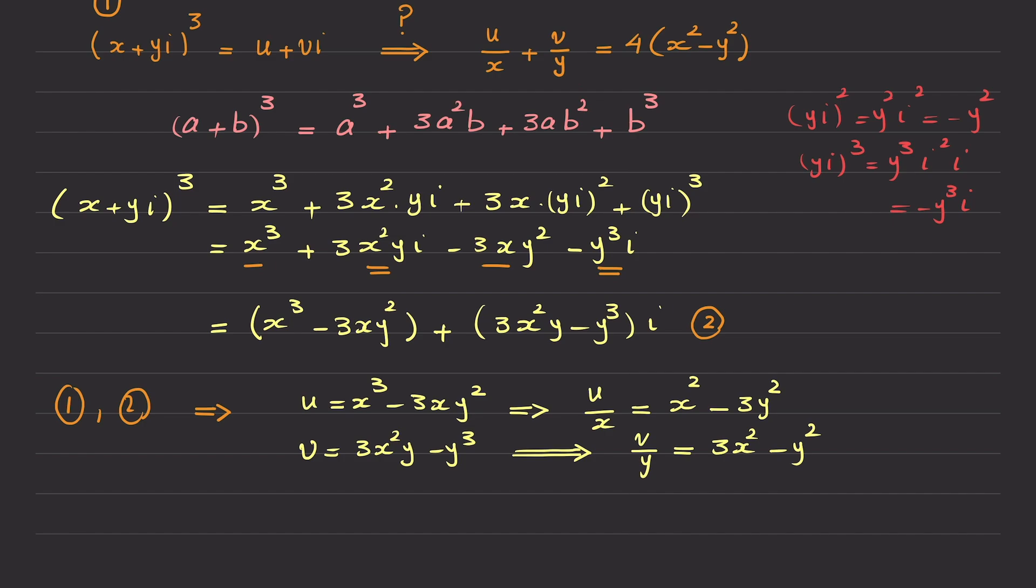Okay, but what I'm going to do, according to this, I have to add these two fractions. So I start adding these two equalities side by side. If I add them, the left hand side becomes simply u/x + v/y. And the right hand side becomes x² - 3y² + 3x² - y². But you can simply see that x² + 3x² is 4x², and minus 3y² minus y² is minus 4y².